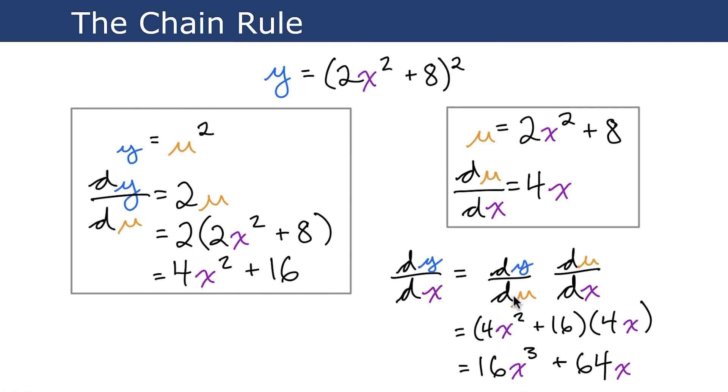And when we do that, the du in the denominator here will cancel out the du in the numerator here, leaving us with dy/dx, the derivative that we're ultimately after. And so we simply drop in dy/du in here. We drop du/dx in here. And then you can multiply out. So 4x times 4x² gives us 16x³. And 4x times 16 gives us 64x. Boom.